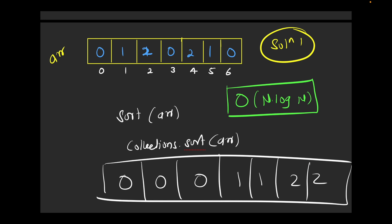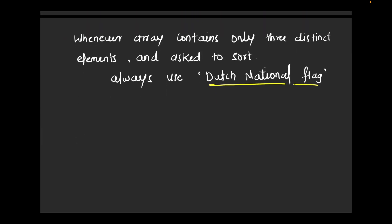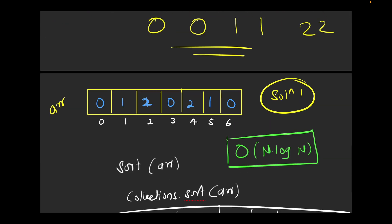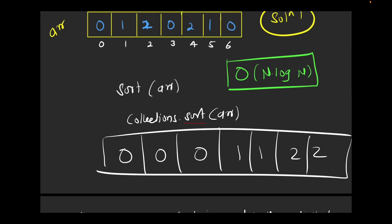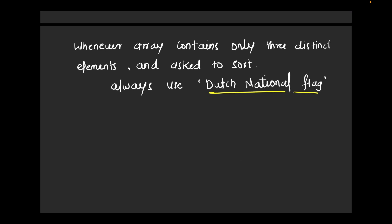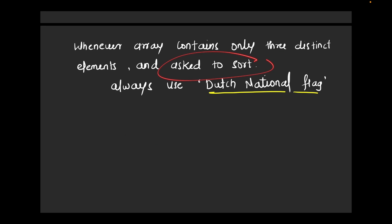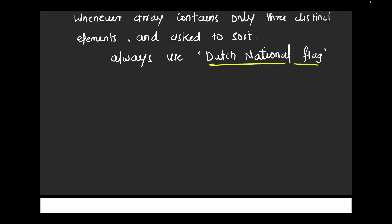Can we do something better than O(n log n)? Yes. The key observation is that our array will always contain only three distinct elements: 0, 1, or 2. Whenever your array has only three distinct elements — whether 0, 1, 2 or 9, 10, 11 or any three values — and you want to sort it, the one algorithm that should come to mind is the Dutch National Flag algorithm.